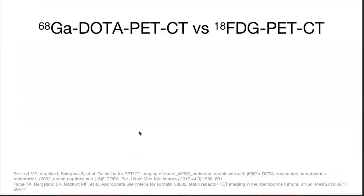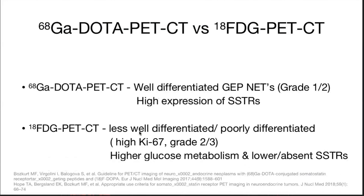For poorly differentiated and less well-differentiated tumors, 18-FDG PET is used because they have high Ki-67 and higher glucose metabolism, and they have lost expression of SSTR receptors. For grade 1 and 2 well-differentiated tumors with high SSTR expression, Gallium-68 DOTA PET-CT is used.